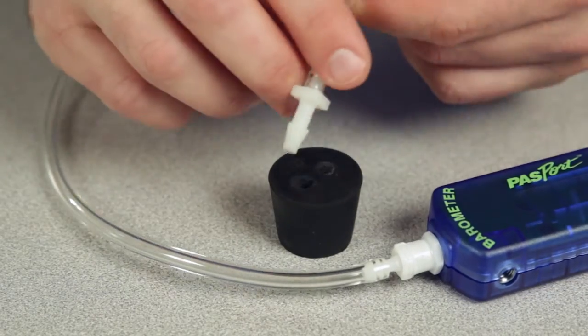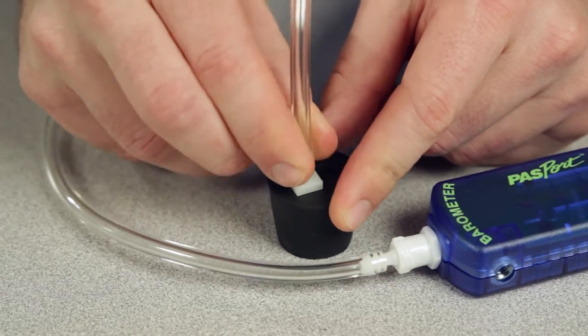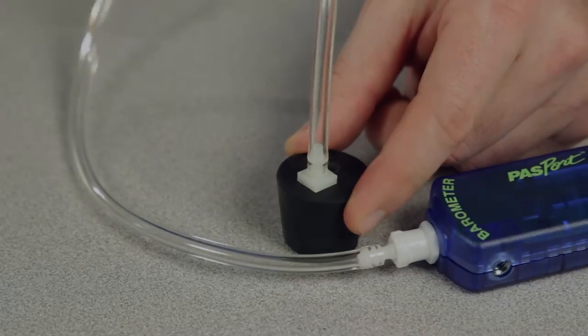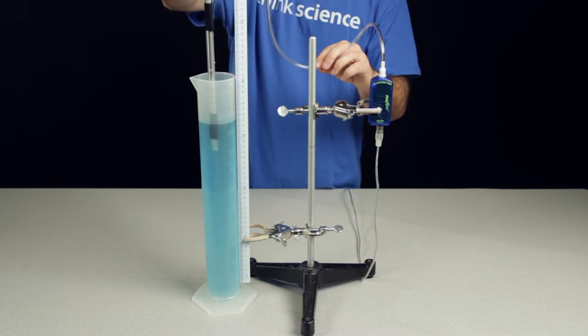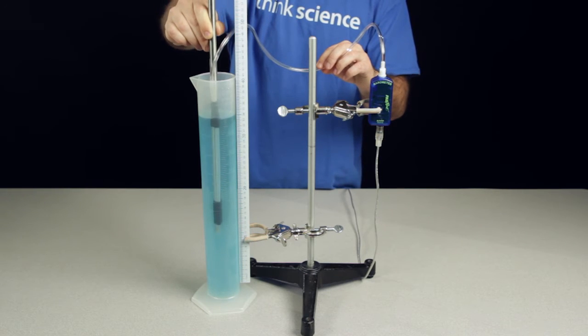Connect the open end of the tubing to accessories using the inline connectors or other tubing connectors, or keep the end of the tubing open and use the tubing as a basic probe to measure pressure at the position of the tubing's open end.